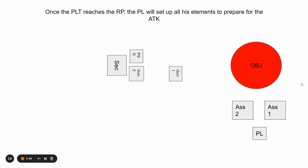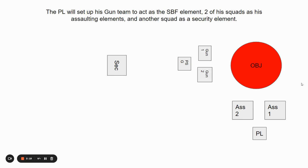Once the platoon reaches the RP, the PL is going to set up his assault elements in any way he wants. He's going to set it up down here and he's going to be with them. He's also going to set up his weapon squad, gun one and gun two with the PSG controlling that, and then he's going to get security squad to pull rear security on the back.